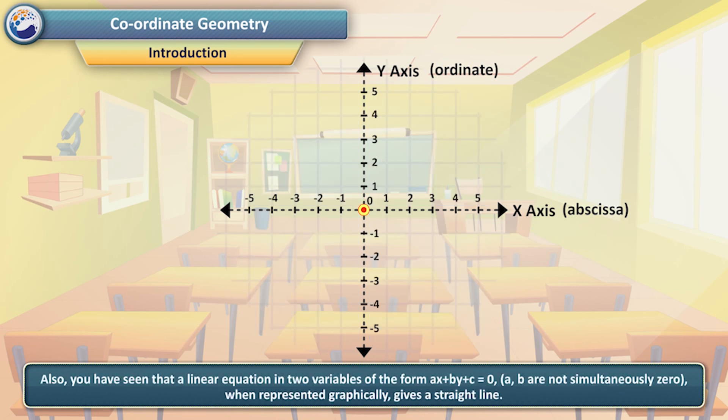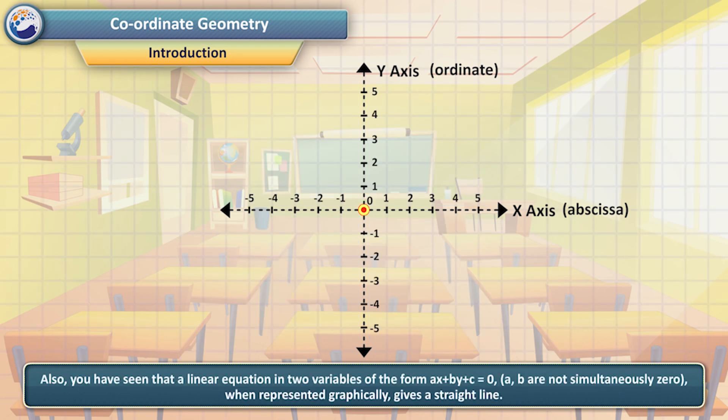Also, you have seen that a linear equation in two variables of the form ax + by + c = 0, where a and b are not simultaneously 0, when represented graphically gives a straight line.